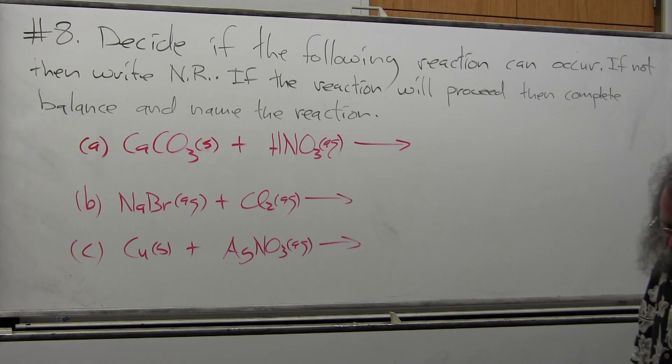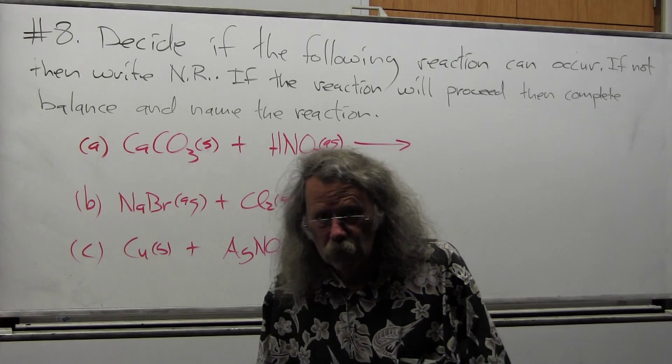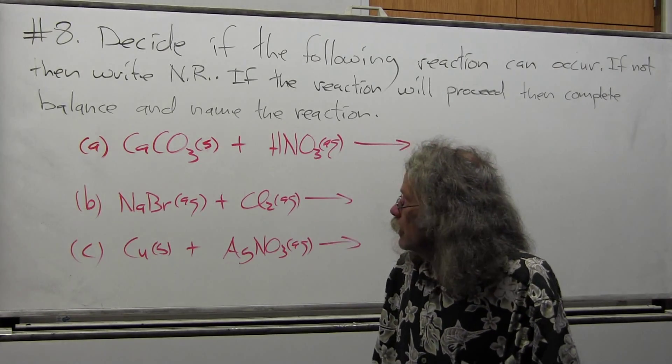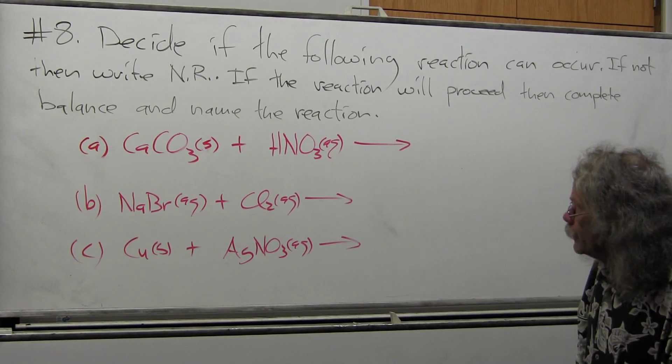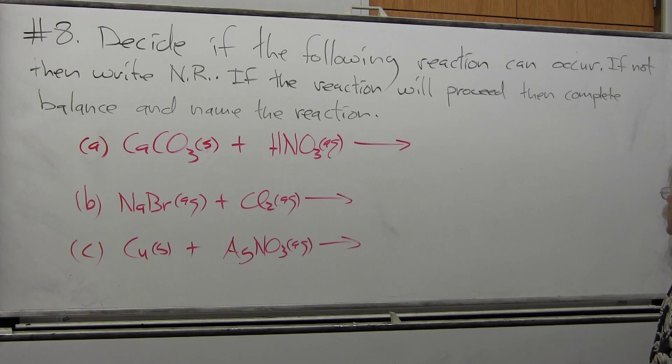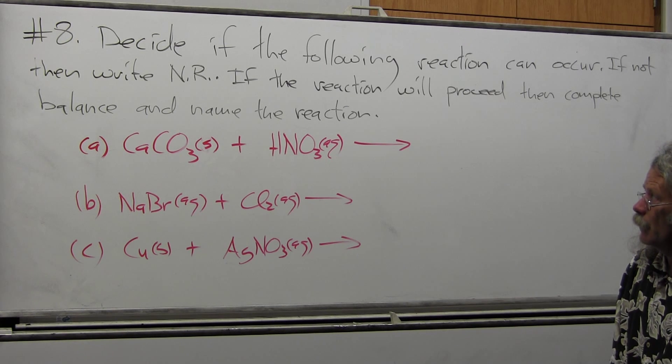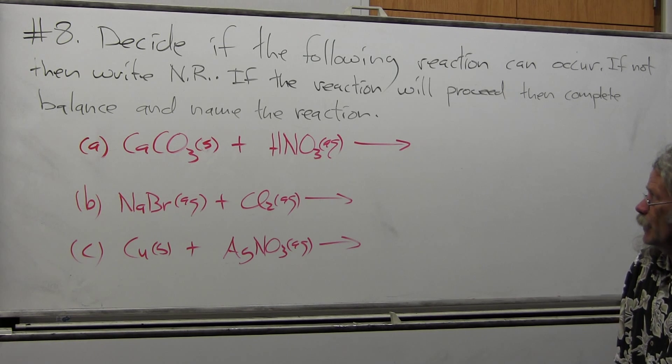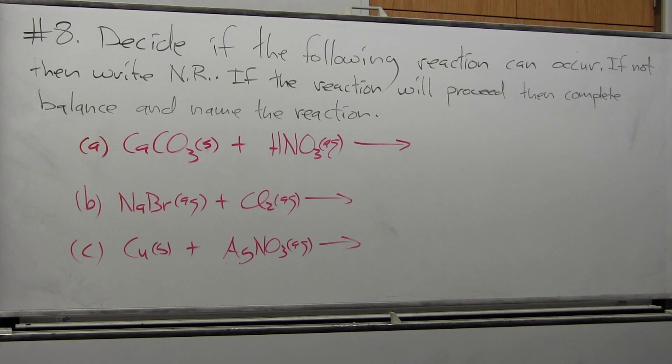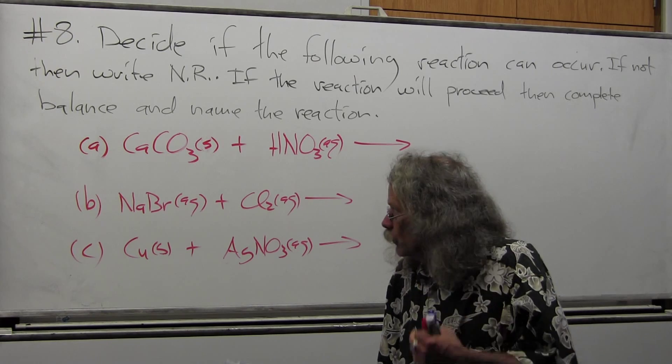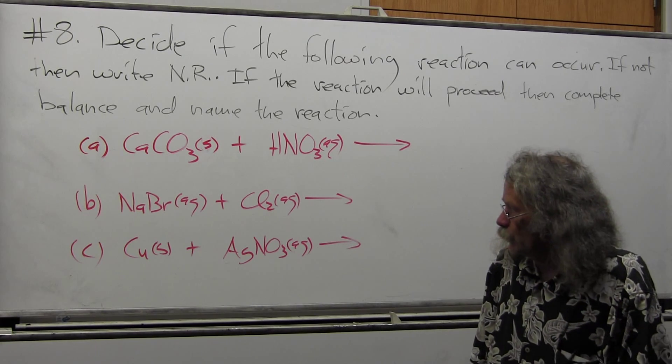This is practice midterm number two, question number eight. The question is: decide if the following reaction can occur. If not, then write N.R. If the reaction will occur, then complete, balance, and name the reaction.